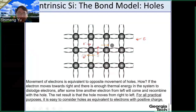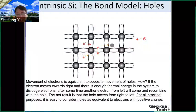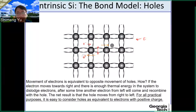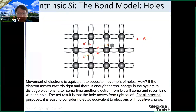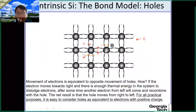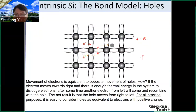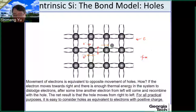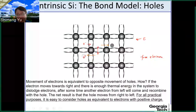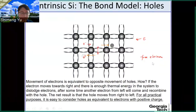The take-home message is: think of the hole as the opposite of an electron. If the electron can move, the hole can move — but in the opposite direction under the electric field. The electrons that can be moved are called free electrons, as distinct from those bonded with atoms. In this course, we only care about free electrons, because bonded electrons do not contribute to current.